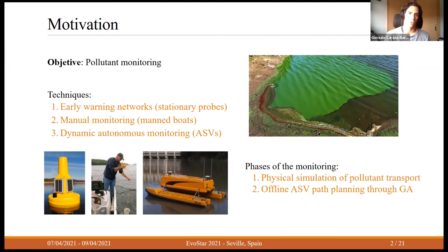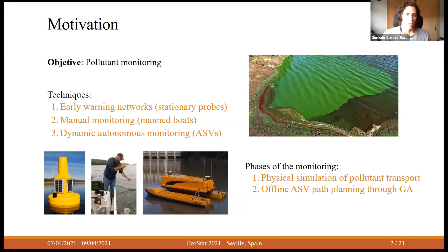The second technique is manual monitoring, which basically consists of sending someone in a boat to take samples. This can be done anywhere in the lake or reservoir, but only sporadically because it becomes costly otherwise. Finally, the alternative to which this paper contributes is dynamic autonomous monitoring through the use of ASVs — autonomous surface vehicles — which consist of sending an autonomous boat anywhere in the lake to take measurements as often as needed, at much lower cost.